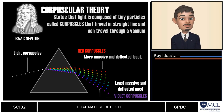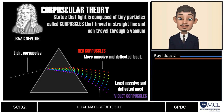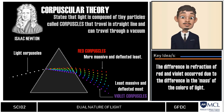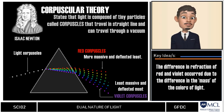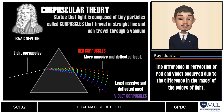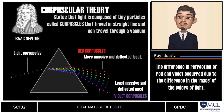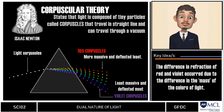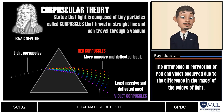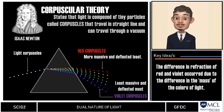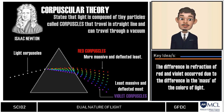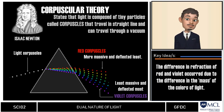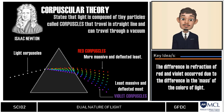According to Newton, this difference in refraction of red and violet light occurred due to the difference in the mass of the colors of light. Red light corpuscles are more massive, which is why they deflect the least, while violet corpuscles are the least massive, which is why they deflect the most. That is the brief background of Newton's corpuscular theory.